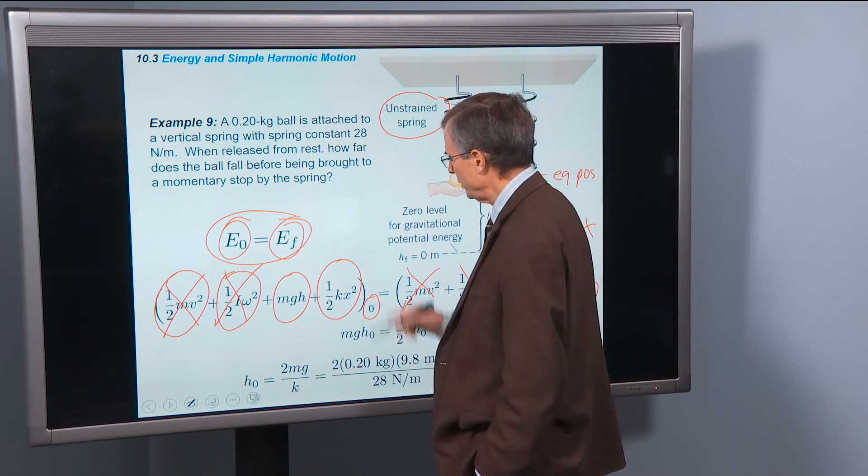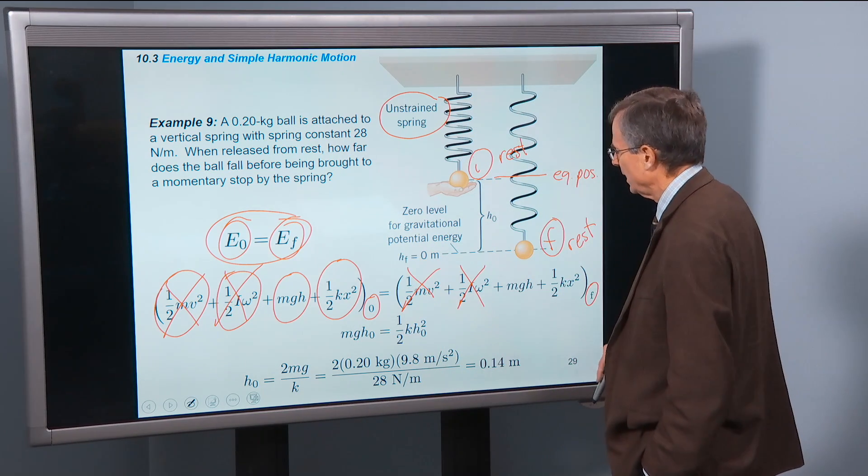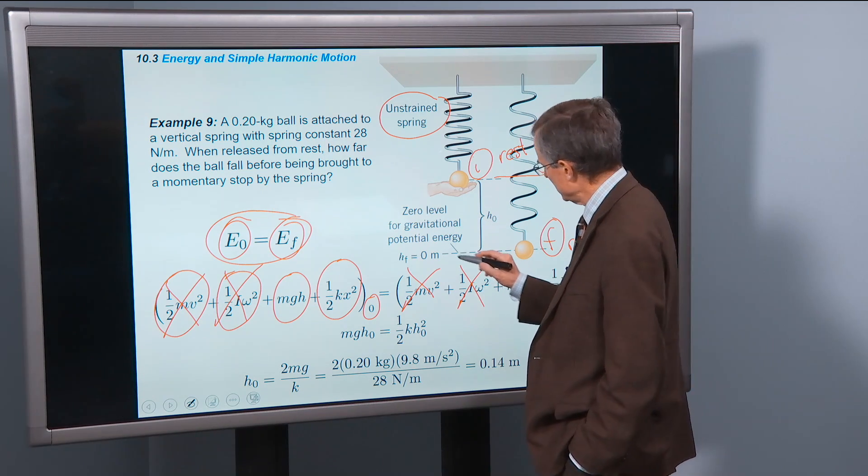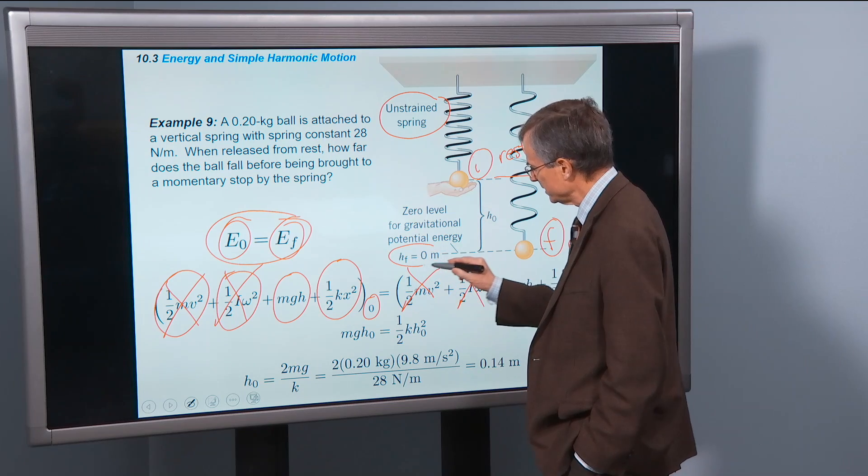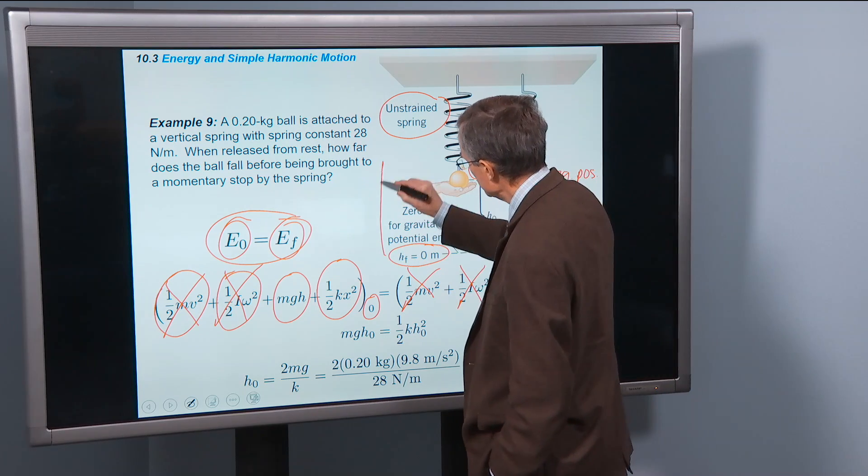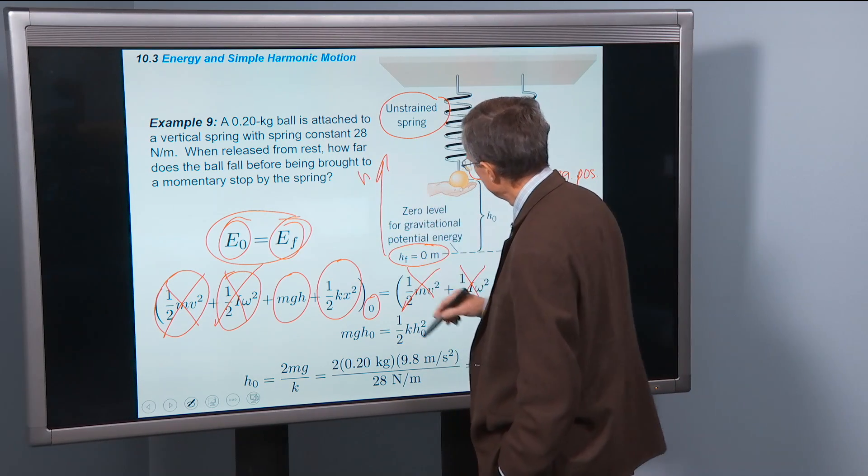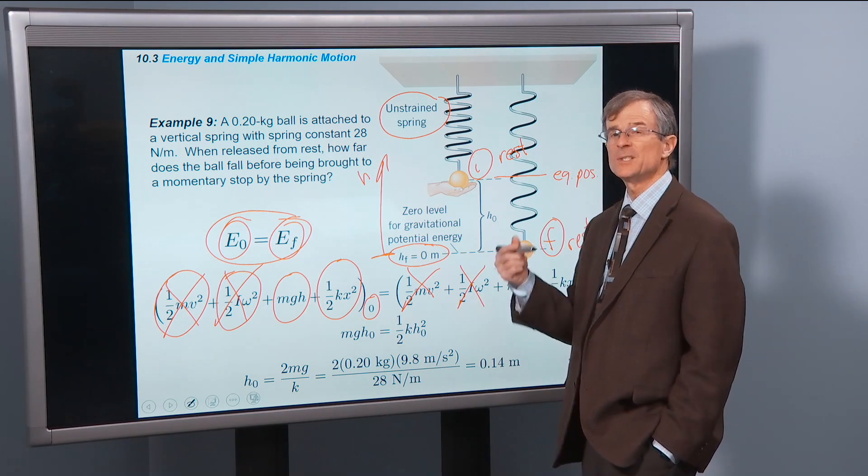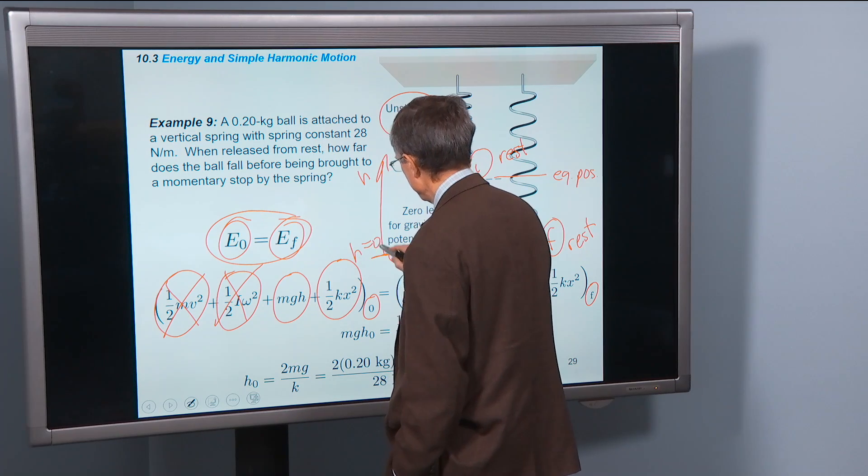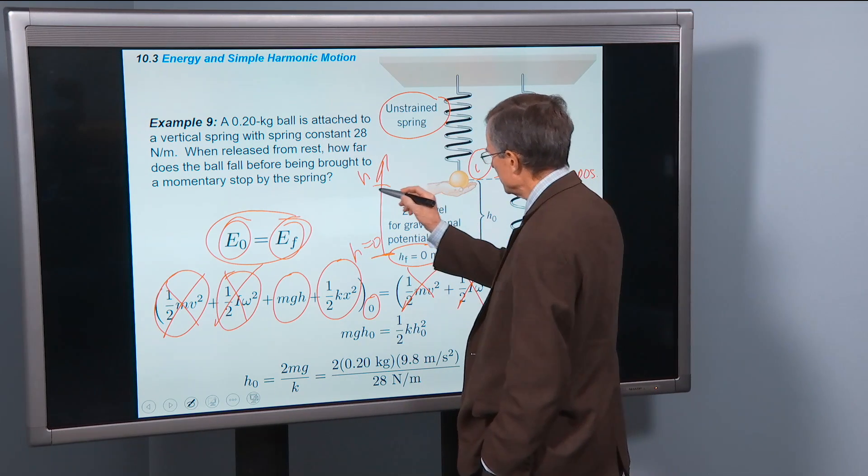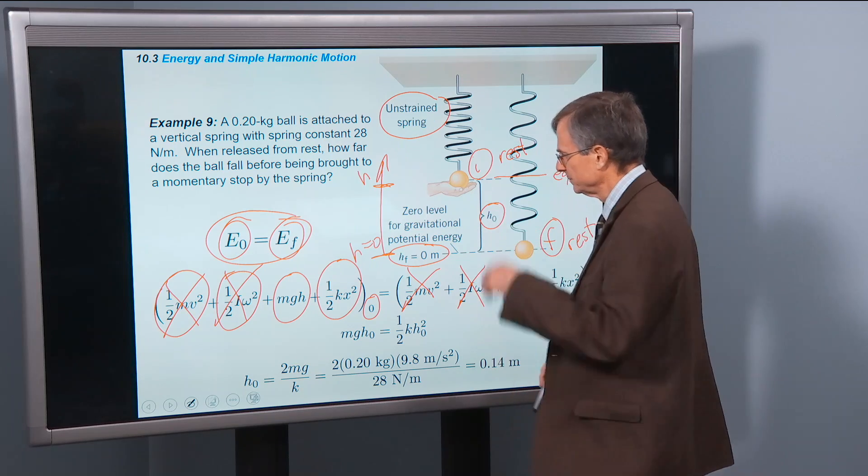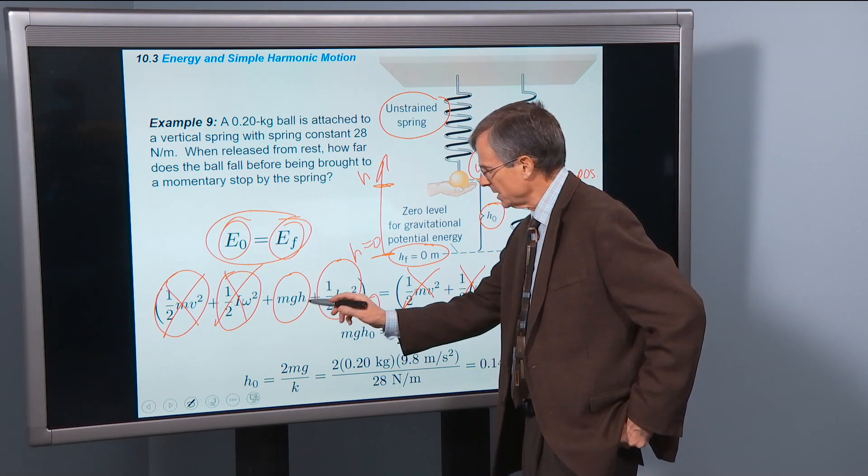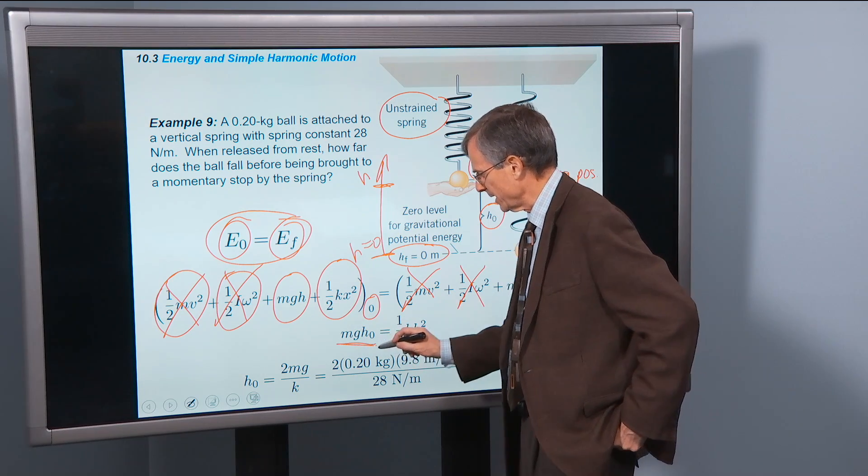We do have some gravitational potential energy. And we're going to take this final position, we're going to be measuring heights assuming that the final position is a zero height. The initial position is h naught.